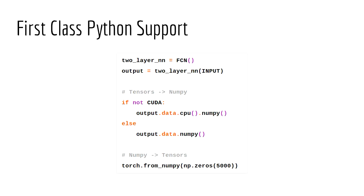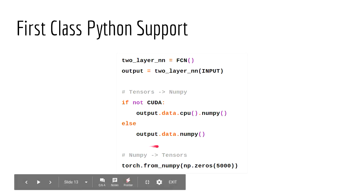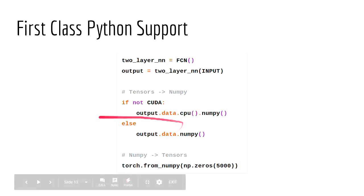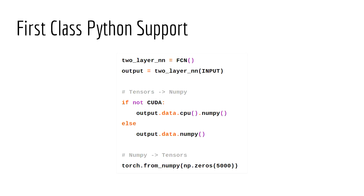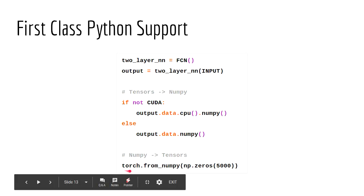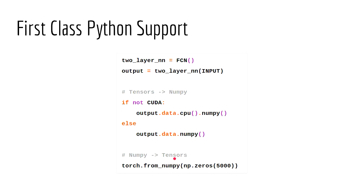PyTorch has deep integrations with Python. Say you have your output and you want to turn it into a NumPy array to chuck it into a CSV. All you do is call .data.numpy() and you return a NumPy array. If you're on CUDA, you call .cpu().numpy(). And that's how you turn your tensor into a NumPy array. To turn your NumPy array into tensors, all you do is call torch.from_numpy() with your NumPy array and you return a tensor. These features are baked into the framework for your convenience — you don't need to go to a third-party contrib library. It's built into the framework.